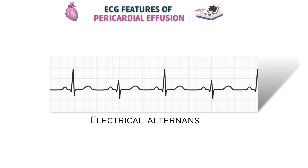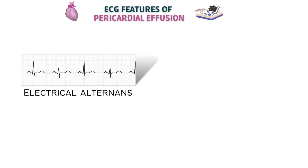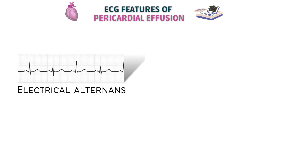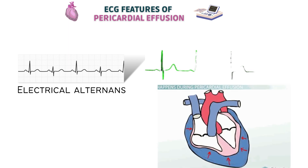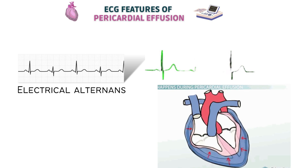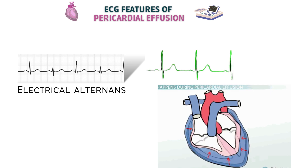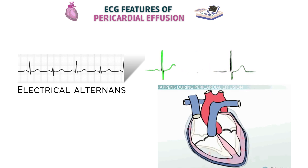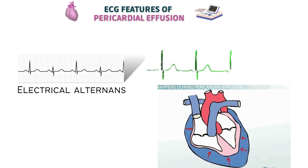The most common feature seen on an ECG is electrical alternans, which is when there are alternating loud and soft QRS complexes due to varying amounts of fluid around the heart during each cardiac cycle. Electrical alternans is essentially a beat-to-beat variation of the QRS amplitude or axis. This tells you that the heart is swinging to and fro in a large effusion, altering its relationship with the ECG leads from beat to beat.